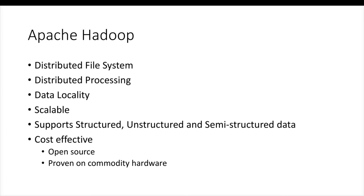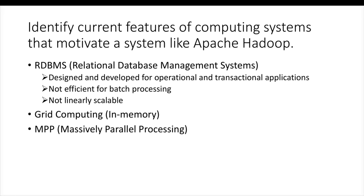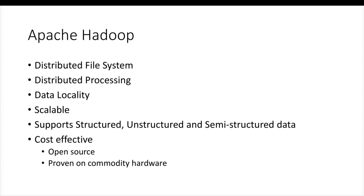Apache Hadoop is cost-effective because most of the software is open source and it is proven on commodity hardware, so you don't have to invest a lot of money on enterprise-class hardware. If you take the example of MPP, even though performance might be on par with or sometimes better than Hadoop, it requires a lot of investment. For example, 3-4 years back, Teradata used to cost around $125,000 per terabyte of capacity, whereas Hadoop costs around $5,000 to $15,000 per terabyte — a huge cost difference.